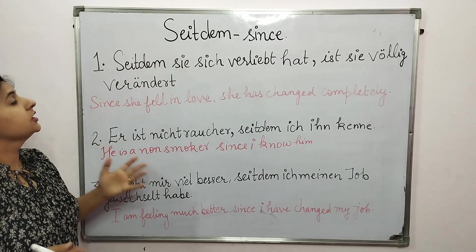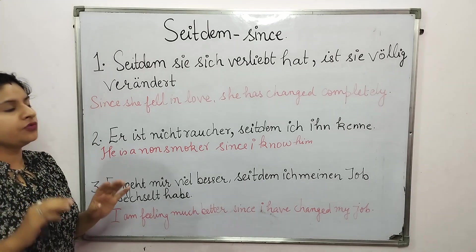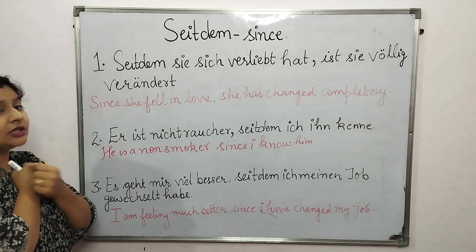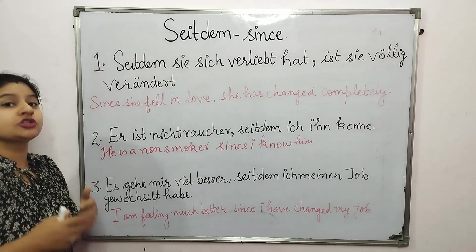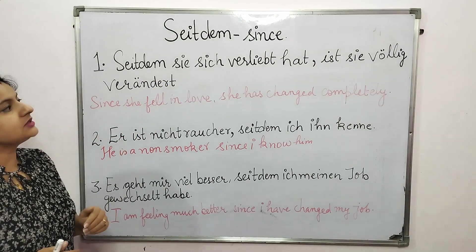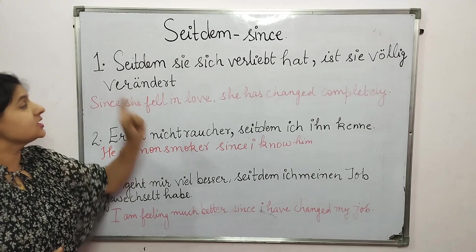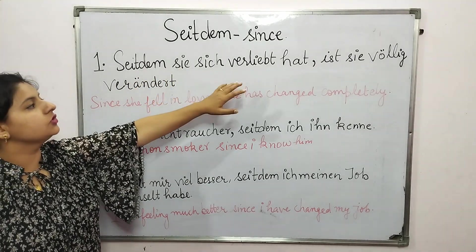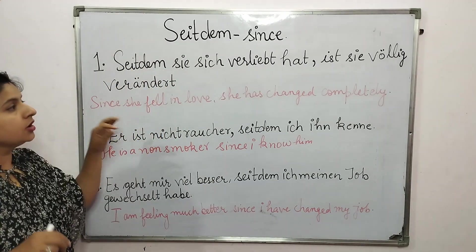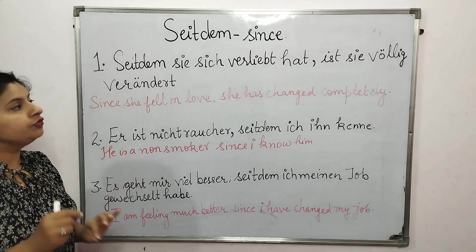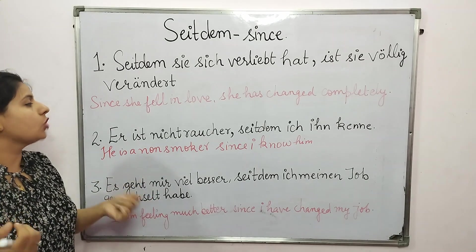Now the last conjunction: seitdem, meaning 'since.' For example: 'Seitdem sie sich verliebt hat, ist sie völlig verändert.' Since she fell in love, she has changed completely. Just like nachdem and bevor, seitdem also makes a Nebensatz — the verb hat goes to the end, then a comma, and after the comma the verb ist follows. Remember: after the comma, put the verb, not the subject.